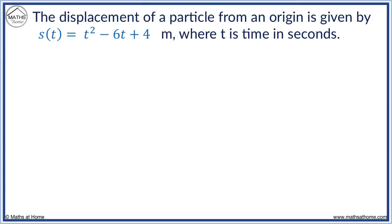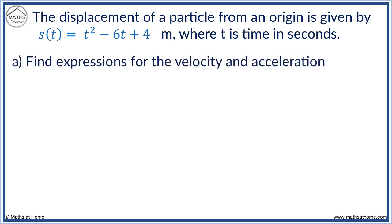Here, the displacement is S equals T squared minus 6T plus 4 meters. We differentiate S to get V equals 2T minus 6. We differentiate V to get A equals 2.